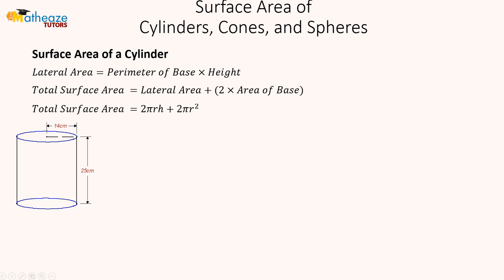The surface area of a cylinder is the same as the lateral area plus two times the area of the base. The lateral area is the perimeter of the base times the height. This is very similar to what you do with a prism.